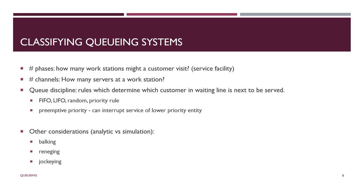As we know, there isn't just a single queuing model. How do we classify queuing models? We need to be able to discuss and identify what kind of system we're talking about. We specify the number of phases — how many times does a customer have to go into service? There may be different service facilities in order, or there may be a choice. How many channels are there? The channels are the identical servers at a particular workstation. What's the queue discipline — FIFO, LIFO, random, or priority? And there's also preemptive priority, where you can interrupt service of some lower-priority entity.